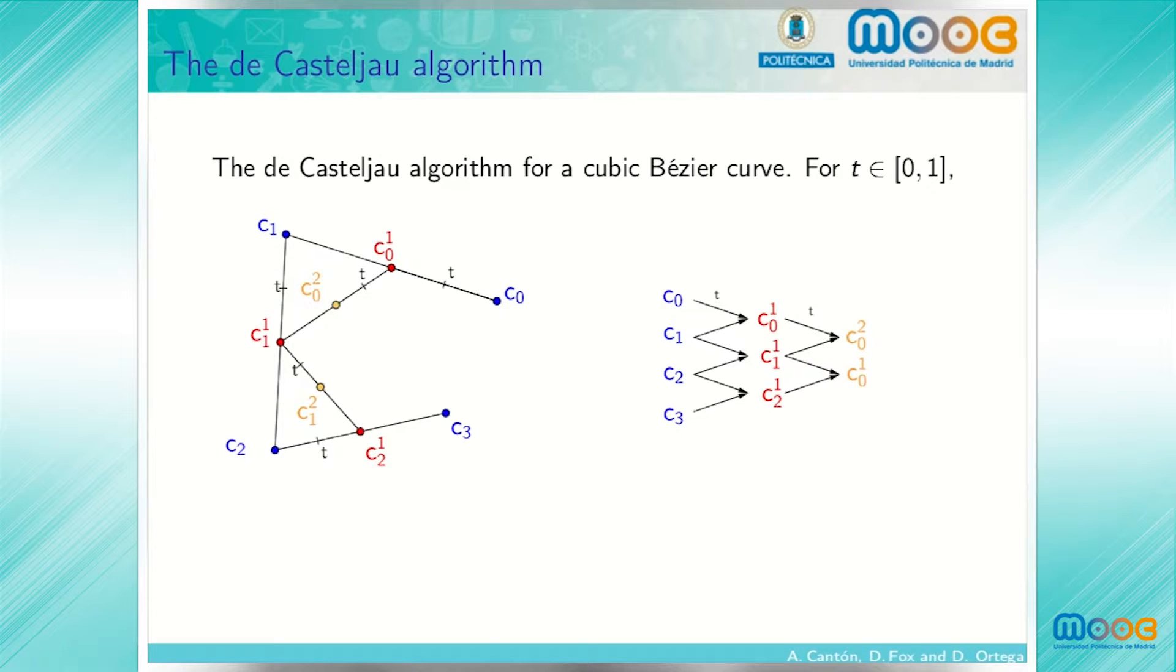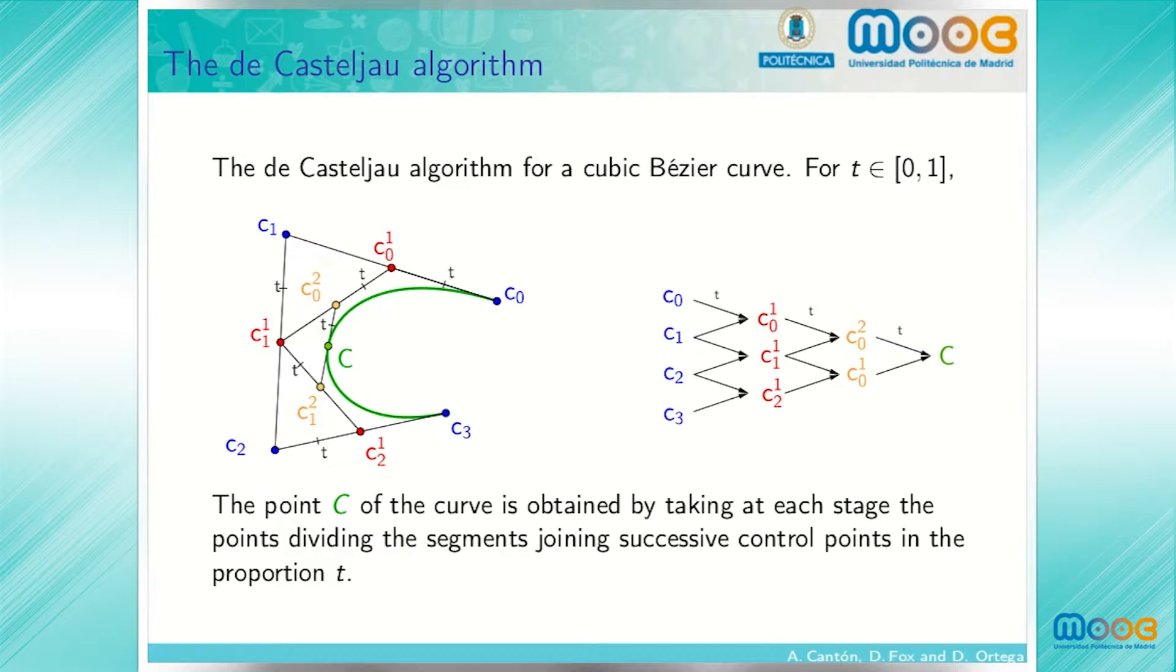We connect them by the segments between successive points of this generation. We subdivide them again in the same proportion t. We obtain two points in this step which we connect by a segment which we finally subdivide again in the proportion t again. The final point obtained is denoted in green and is called c. It is a point of the cubic Bezier curve and all the points of the cubic Bezier curve are obtained in this way for different choices of the value t.